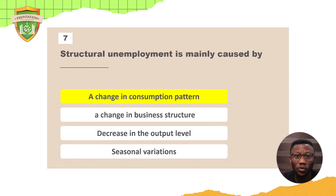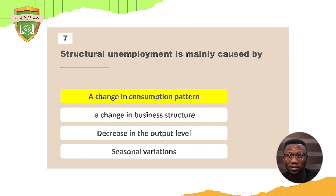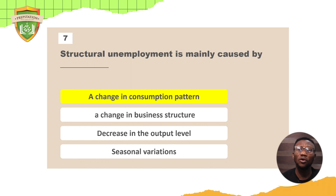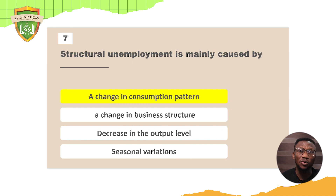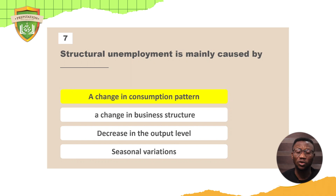Question seven: structural unemployment is mainly caused by a change in consumption pattern. When people don't demand a product anymore, the demand for the labor that produced that product also disappears. When there is a change in consumption patterns, people will be structurally unemployed. For example, if machines could do a complete massage, all masseuses would be out of jobs.